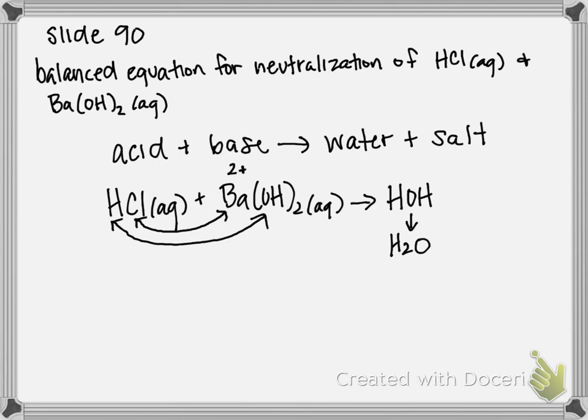And Ba and Cl are going to combine. Barium has a 2+ charge, chlorine has a -1 charge. So therefore my formula is going to be BaCl₂, because I need two chlorines to balance that one barium.